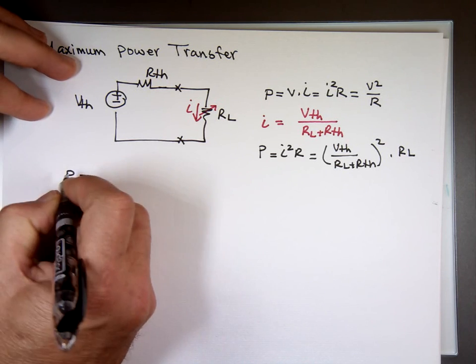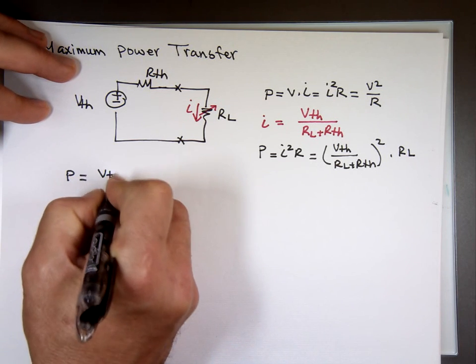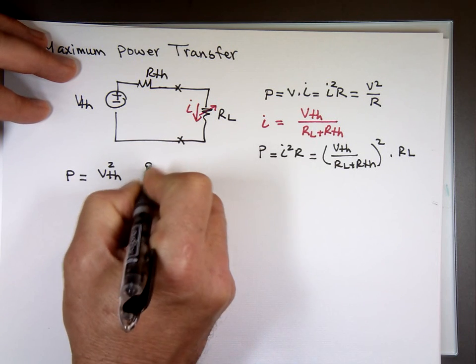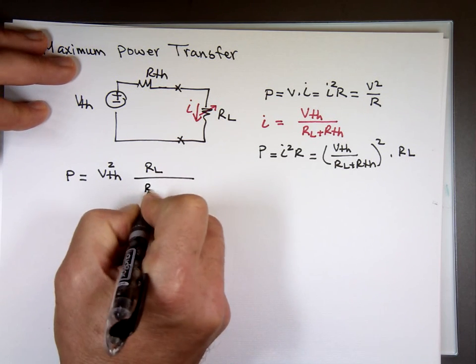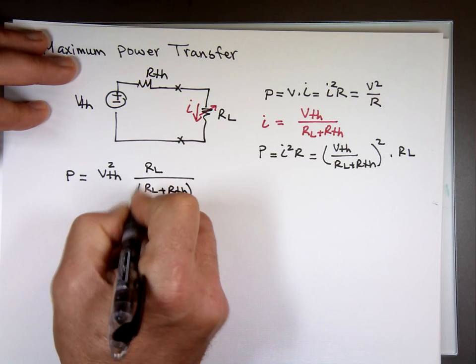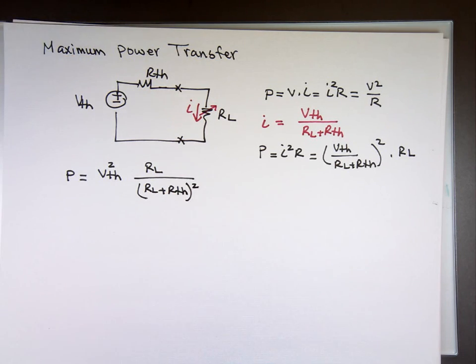So what is the power? Ready for calculus here? I can factor V thevenin out, that's a constant, squared times R sub L over R sub L plus R thevenin squared. I'm looking for the maximum power transfer. The word maximum calculus means what?